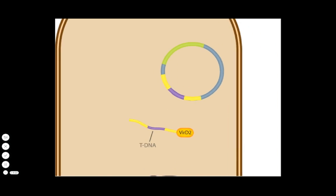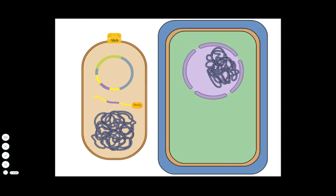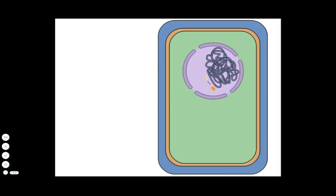VIR-D2 directs the transfer of the tDNA into a plant cell in a process similar to bacterial conjugation. Within the plant cell nucleus, the tDNA becomes integrated into the plant genome.